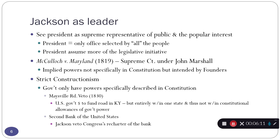One of the ways that really gets expressed is in the issue of what power does the government actually have. Prior to Jackson's time in office, there is a Supreme Court case called McCullough vs. Maryland, which happens in 1819. This case is in the Supreme Court under the chief justiceship of John Marshall, who is almost without question the most important Supreme Court chief justice ever.